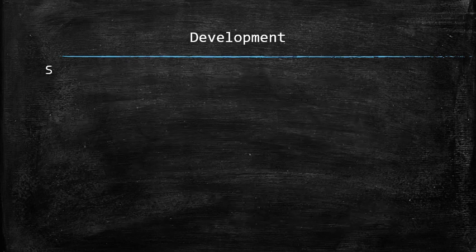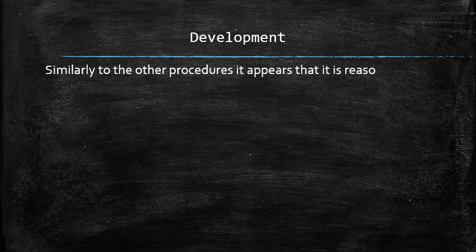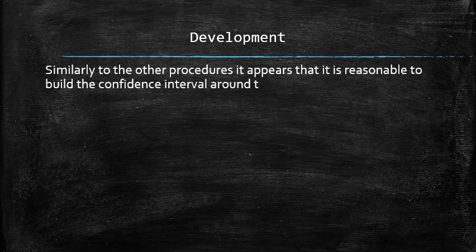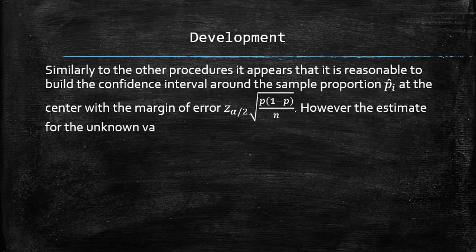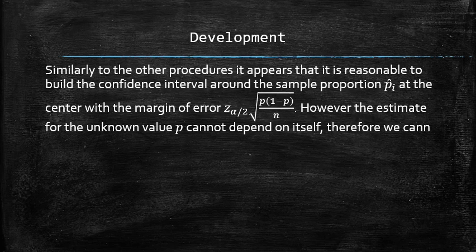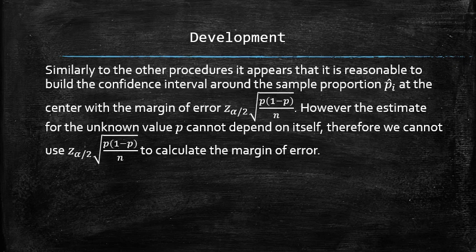Similarly to the other procedures, it appears that it is reasonable to build the confidence interval around the sample proportion p hat at the center with the margin of error z alpha over 2 times standard deviation. However, the estimate for the unknown value p cannot depend on itself. Therefore, we cannot use z alpha over 2 times standard deviation to calculate the margin of error.